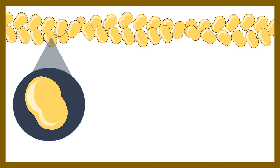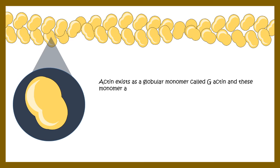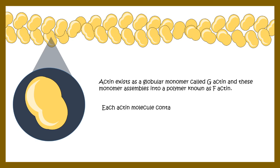Let us look at microfilament structure, assembly kinetics, and stability in detail. Each component of the microfilament is known as globular actin (G-actin). Actin can exist in two forms: a soluble globular actin format or a filamentous actin (F-actin) format. Filamentous actin is basically a polymer of globular actin assembled in a specific way.